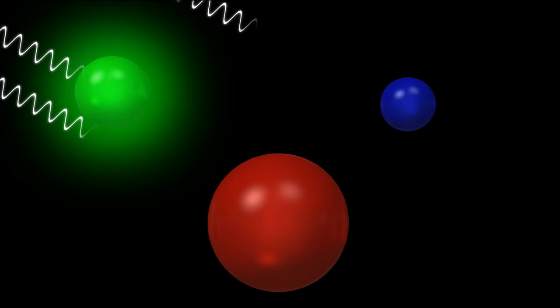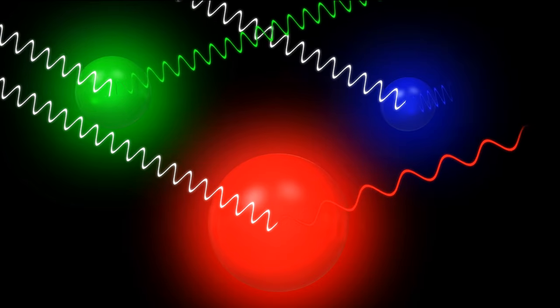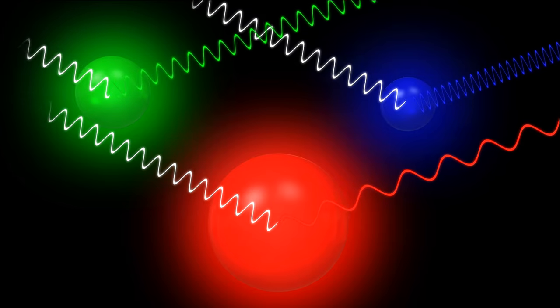When light excites a quantum dot, the larger the size of the dot, the lower the energy waves will be, resulting in a redder light. The smaller it is, the bluer the light will be.